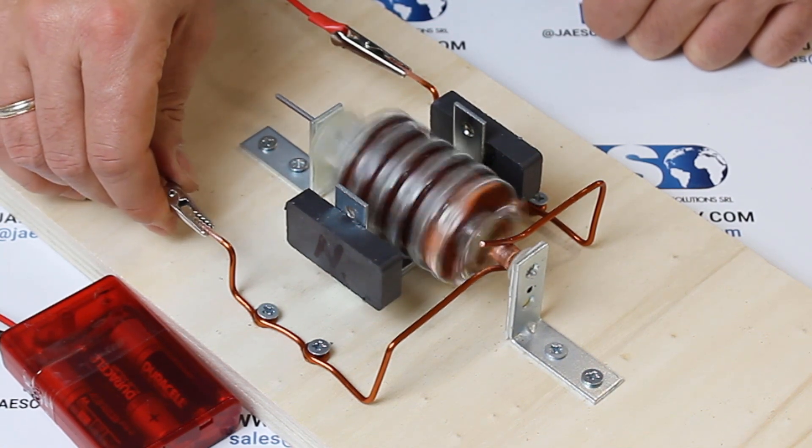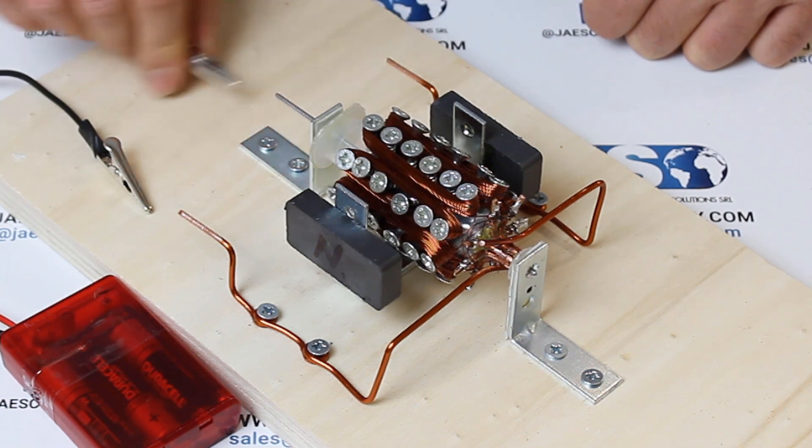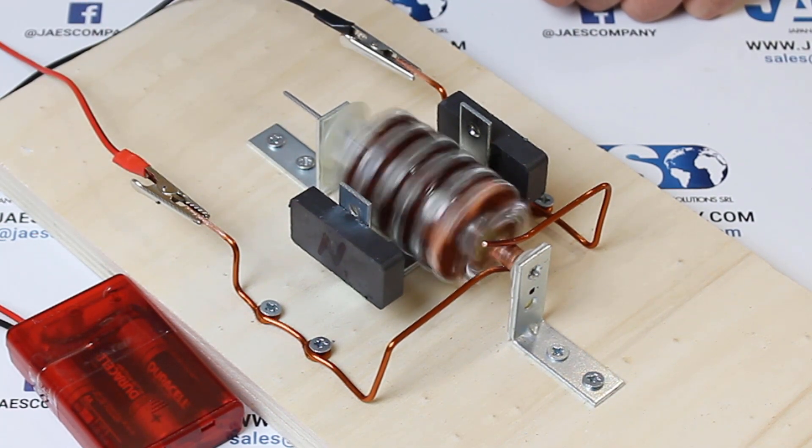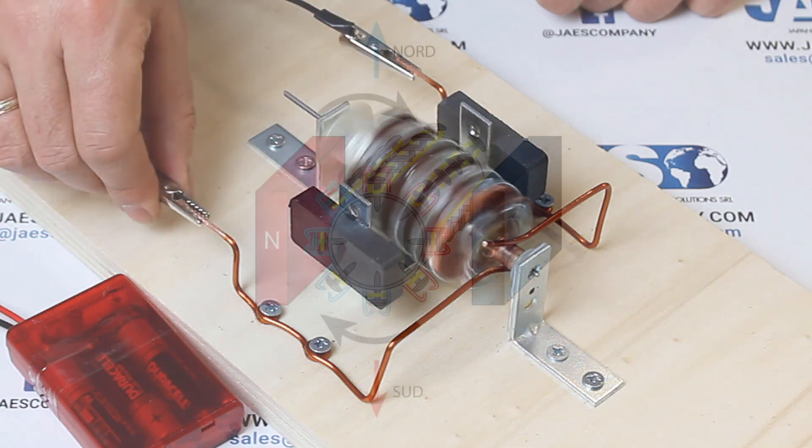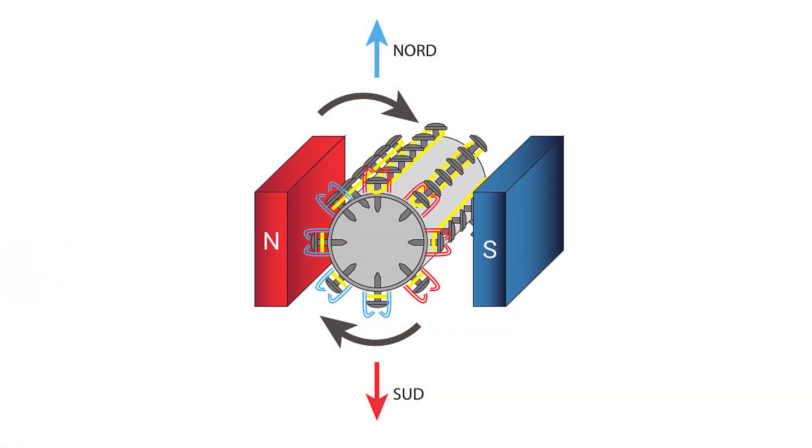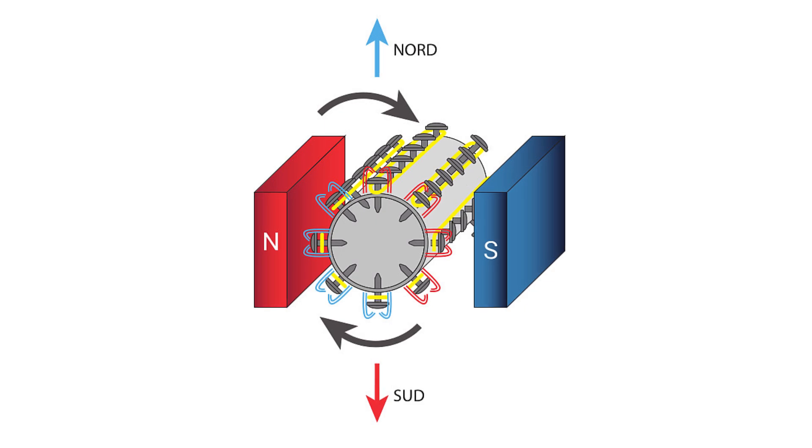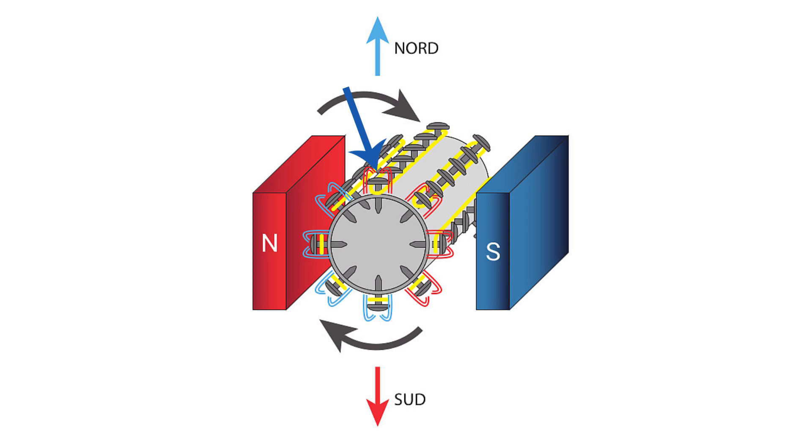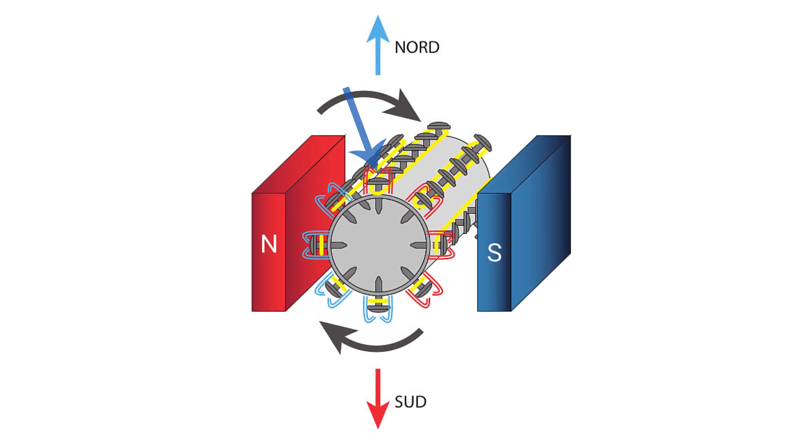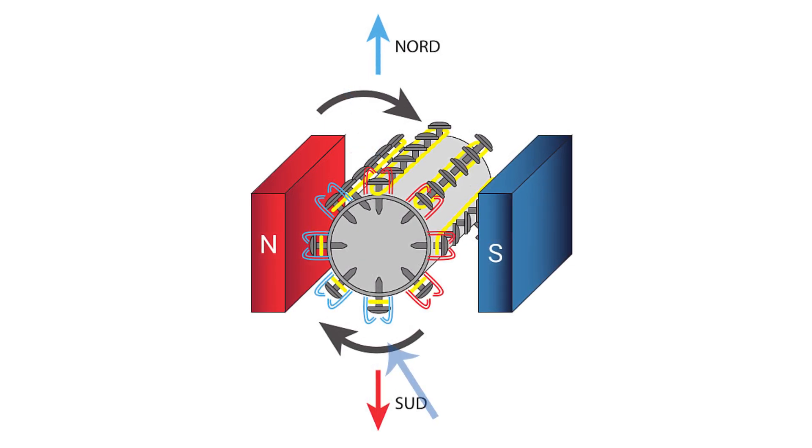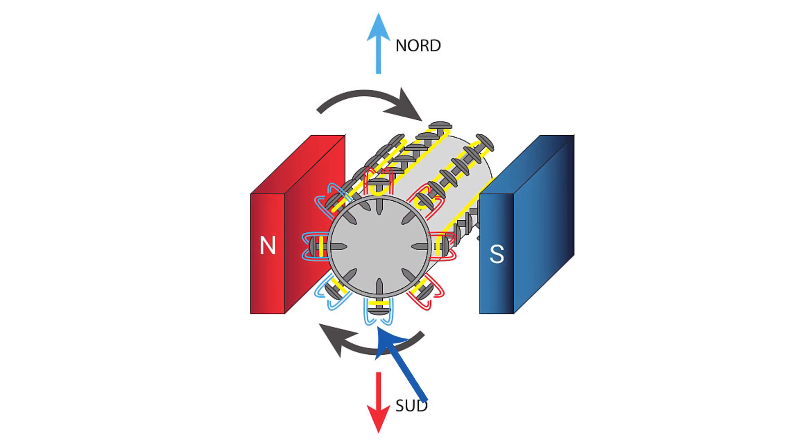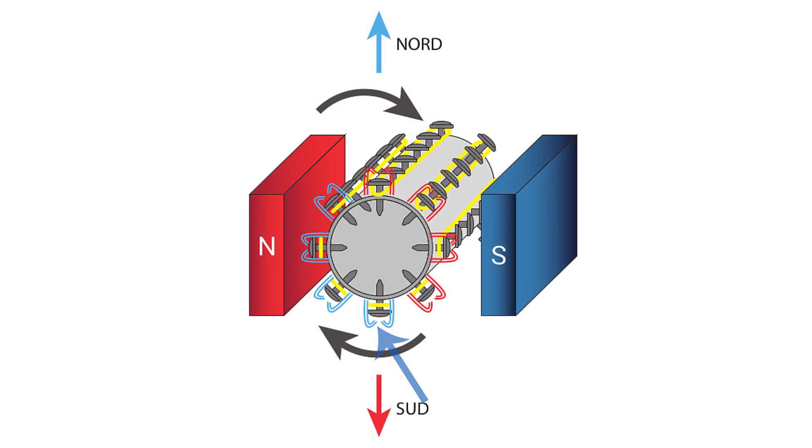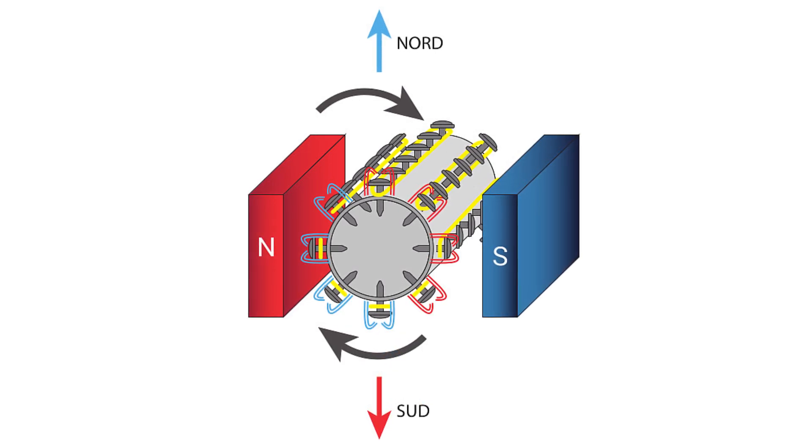When the electricity flows through the coils, an electromagnetic field is created. This means that the electricity has temporarily turned coils into a magnet. In this scheme, the upper coil represents our North Pole, so it will be attracted to the South Pole of the magnet on the right. On the contrary, the lower coil represents our South Pole, so it will be attracted to the North Pole of the magnet on the left, allowing a clockwise motion of our DC motor.